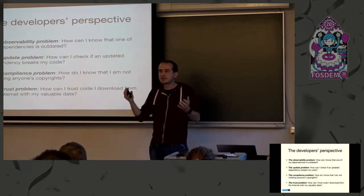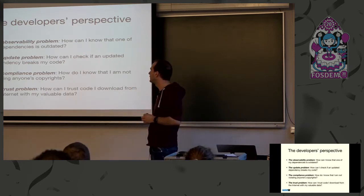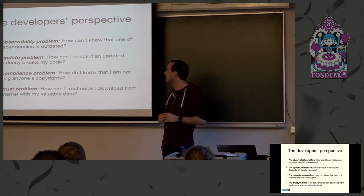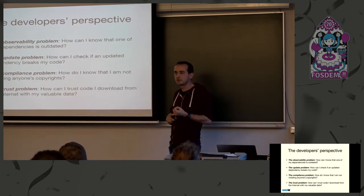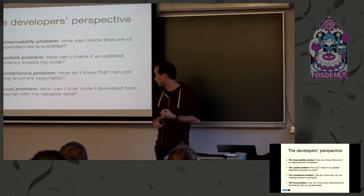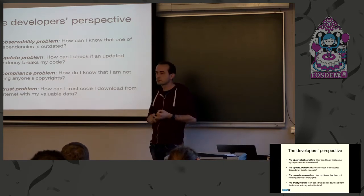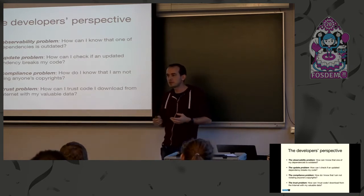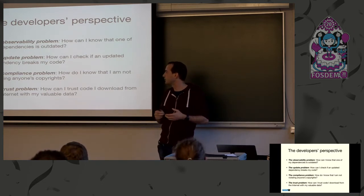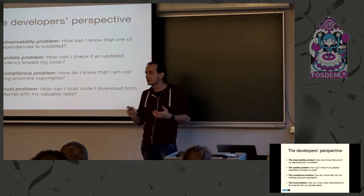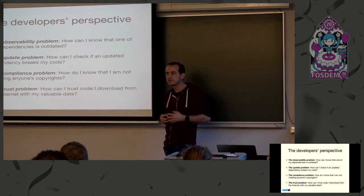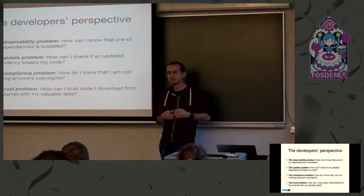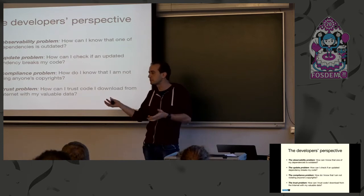If we aggregate what researchers have found over the last two to three years, we can identify four basic problems. First, the observability problem: we don't know whether a new dependency was released and what its impact is. Second, the update problem: if I update, what will break? Third, the compliance problem: how do I know I'm not violating anyone's copyrights or distributing code that is incompatible with my license obligations? And fourth, the trust problem: how can I trust my precious data to code that somebody else has written on the internet?